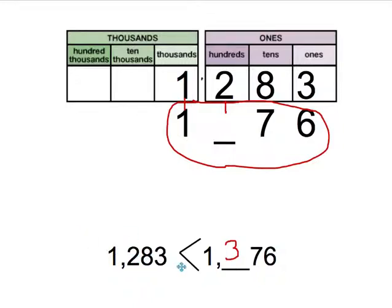Now if I wanted to make it a little bit more tricky, I could try comparing by flipping it. If I wanted to instead make it 1,283 is greater than 1,000-something-seventy-six, I would complete the same procedure, but this time I would circle a different number, which would make a completely different problem. If I'm looking for 1,283 to be the bigger number, I would circle this one.